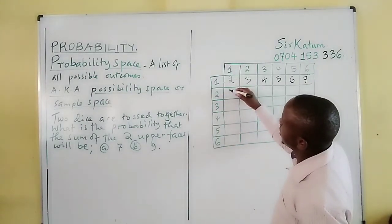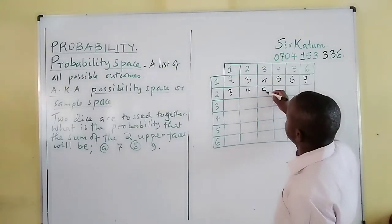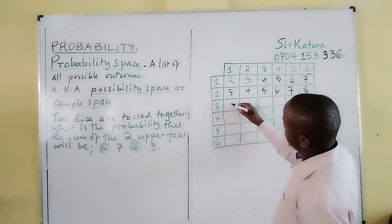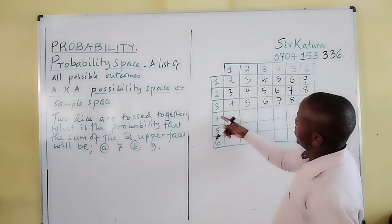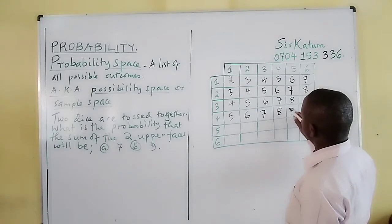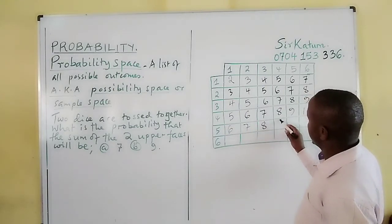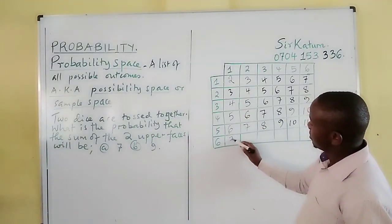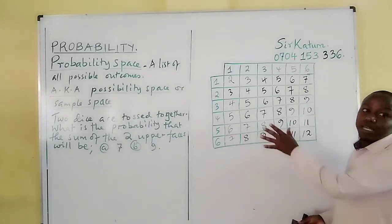We can also have two and one giving three; two and two gives four; two and three five; two and four six; two and five seven; two and six eight. Continuing through all combinations: three and rows give four, five, six, seven, eight, nine; four and one gives five, up to ten; five and one gives six through eleven; six and one gives seven through twelve.